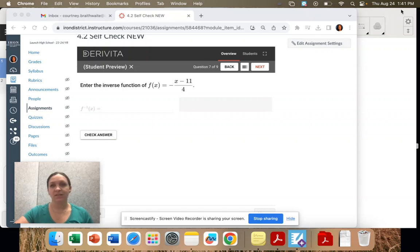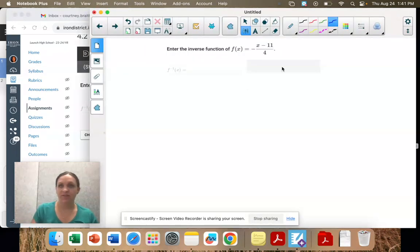Number 7, we have a function. I'm going to change this to y. So I have y equals negative x minus 11 over 4.